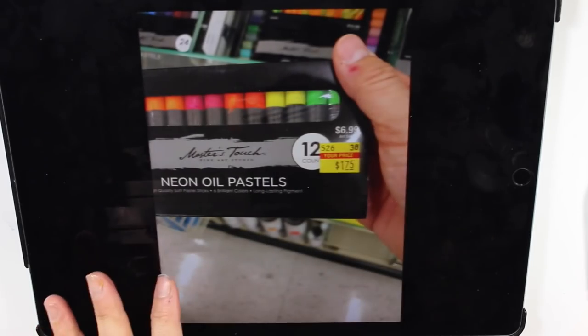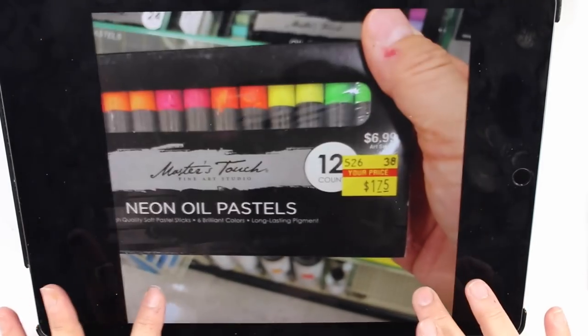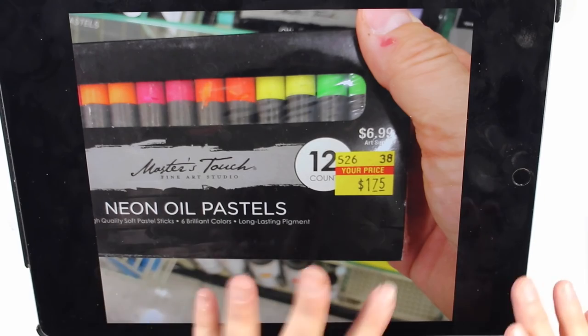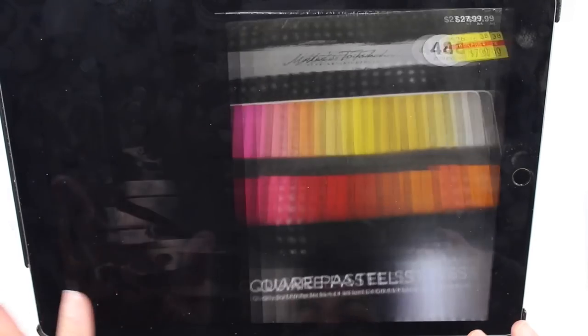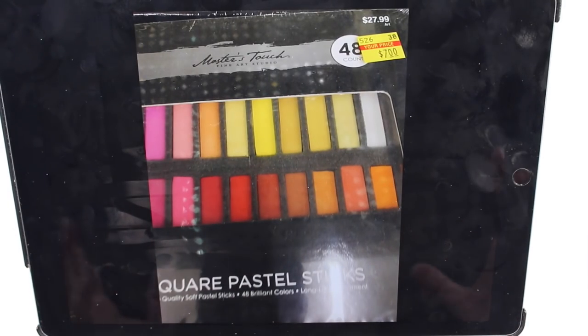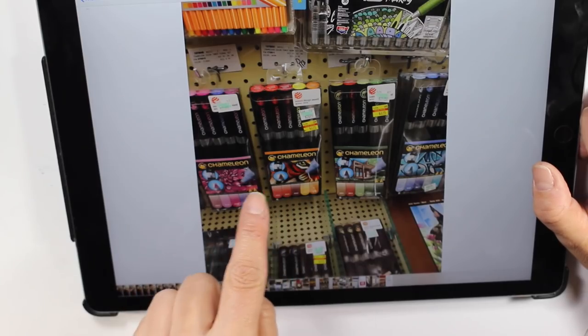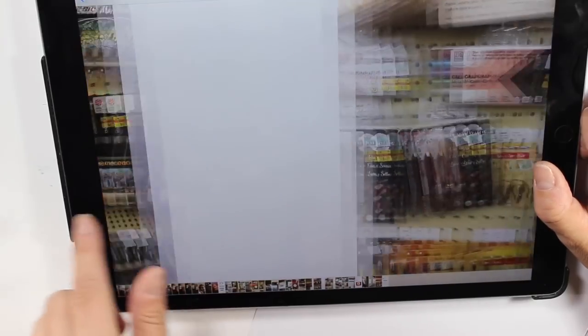Pencils. Okay. So they had a lot of their Master's Touch stuff. Like their stuff, pretty cheap, their pastels, all their pencils. They had stacks and stacks of their pencils for a couple of dollars. Like their 48 count pencils. Here we go. Here's these, chameleon markers that I picked up some of.